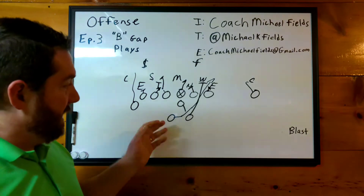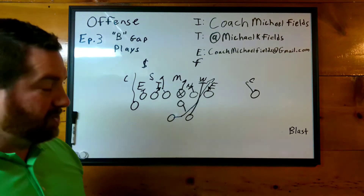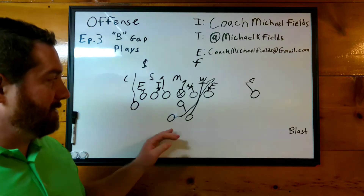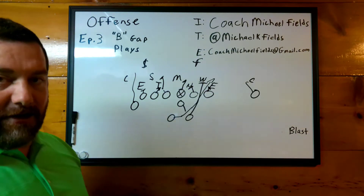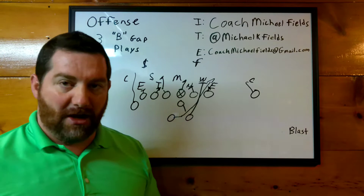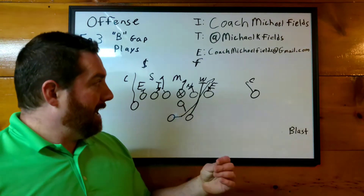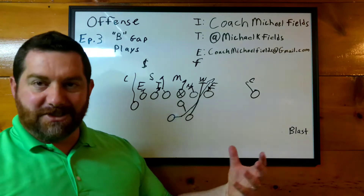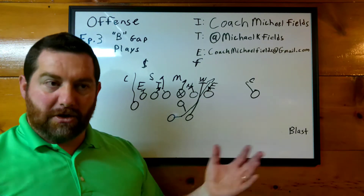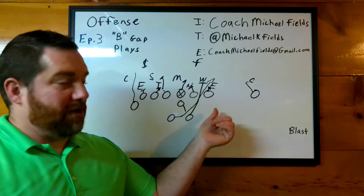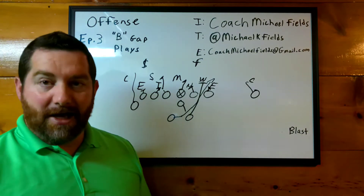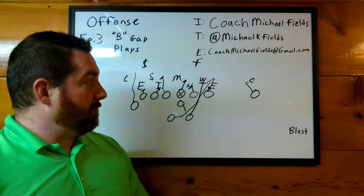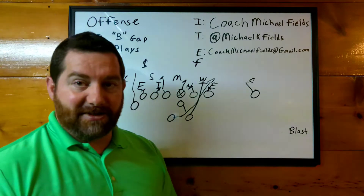I used to love running this play on what I call my alert package. We had a Rhino call for the right, Loco to the left, and we'd set up and just run it on the ball. I love it if we had a nice first down play and it's second and two, second and short, or third and short — we would just yell alert, then Rhino or Loco, and that told the guys which way to line up and run the play. Great way to change tempo as well.